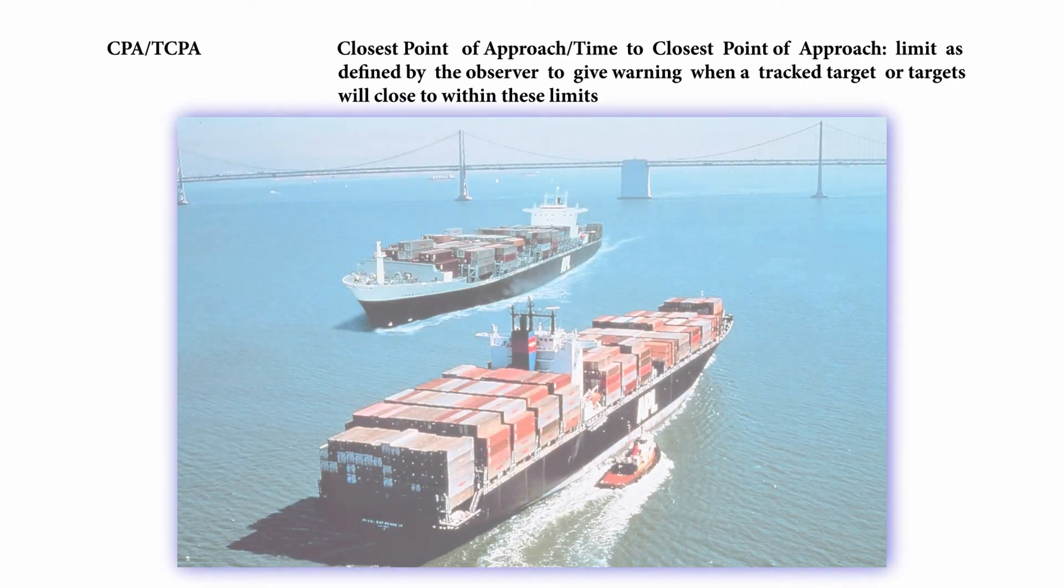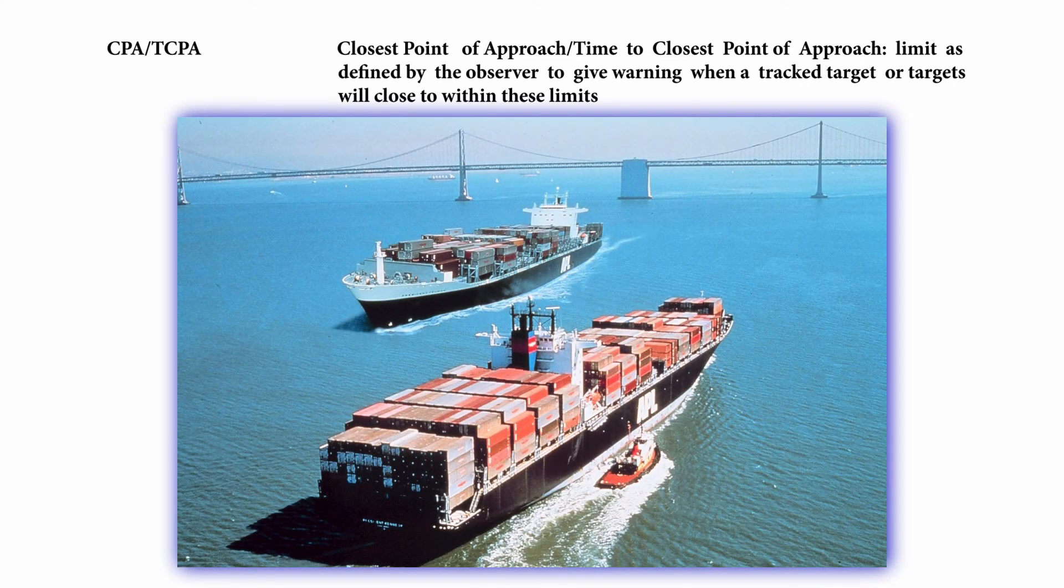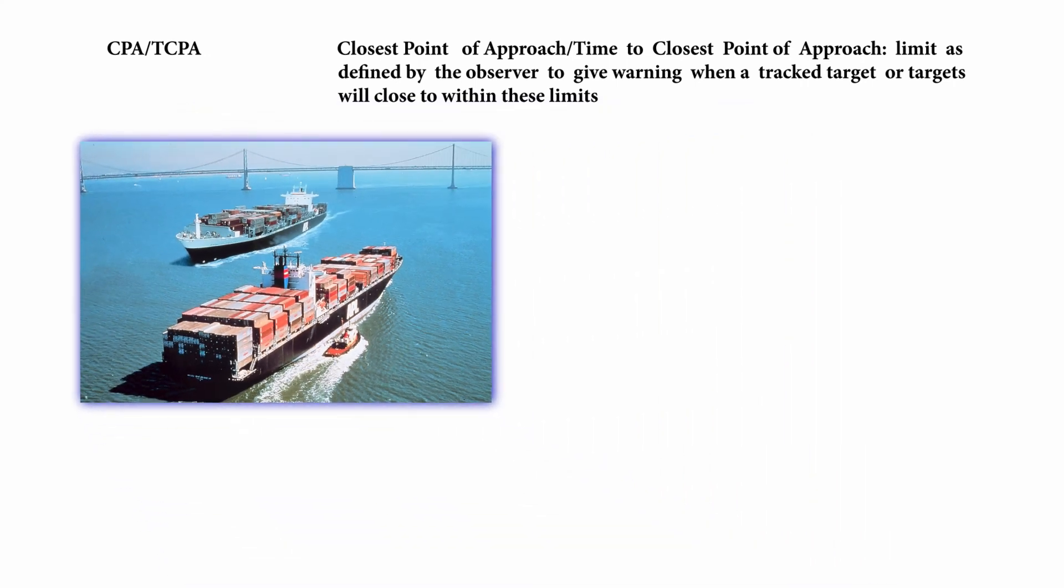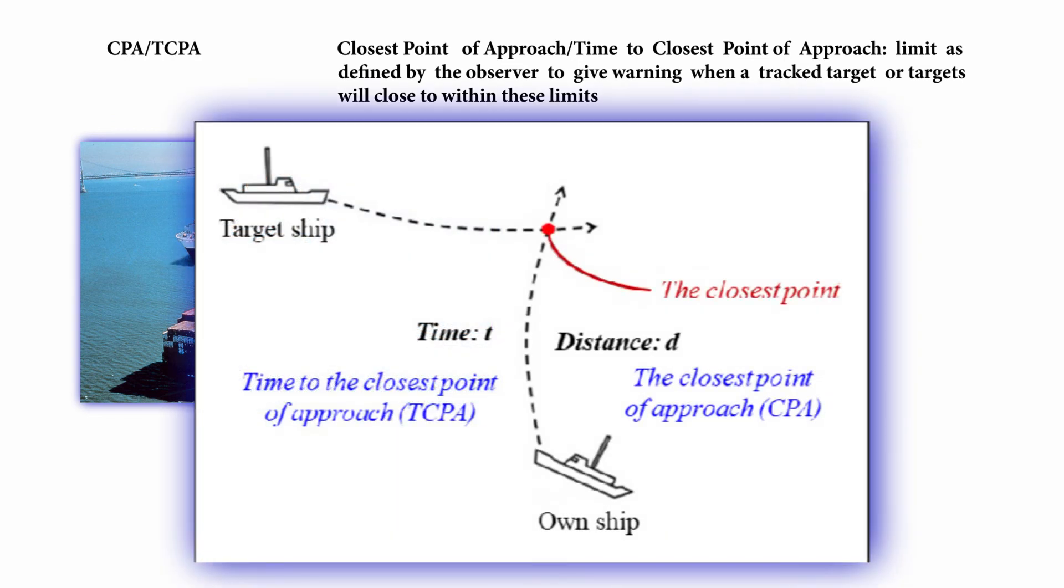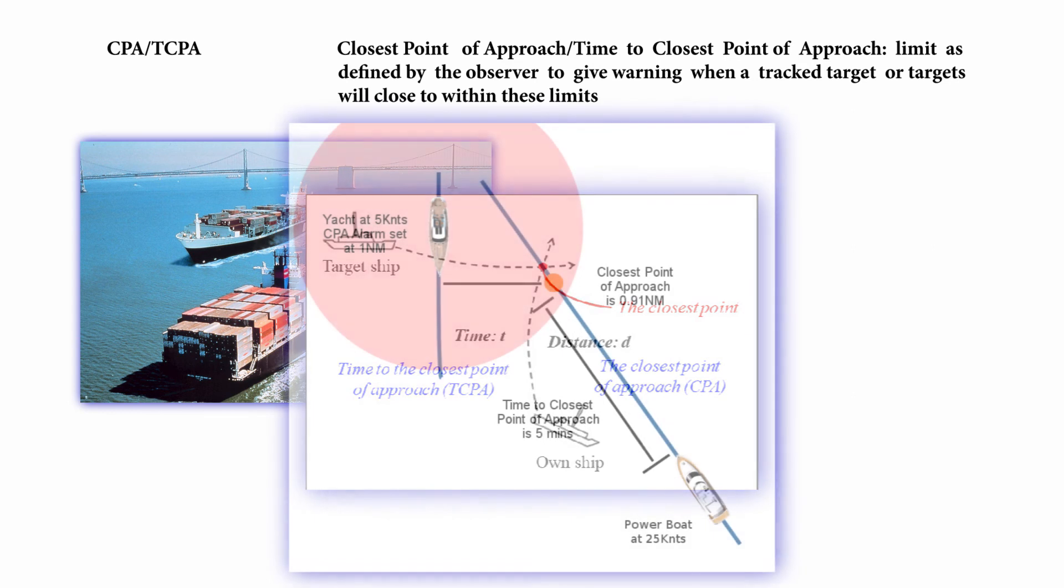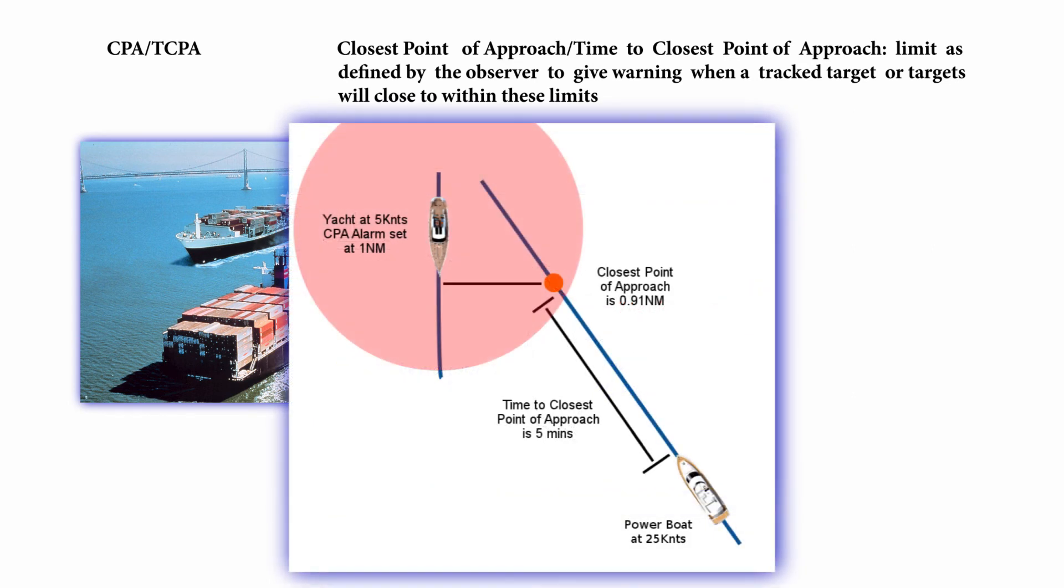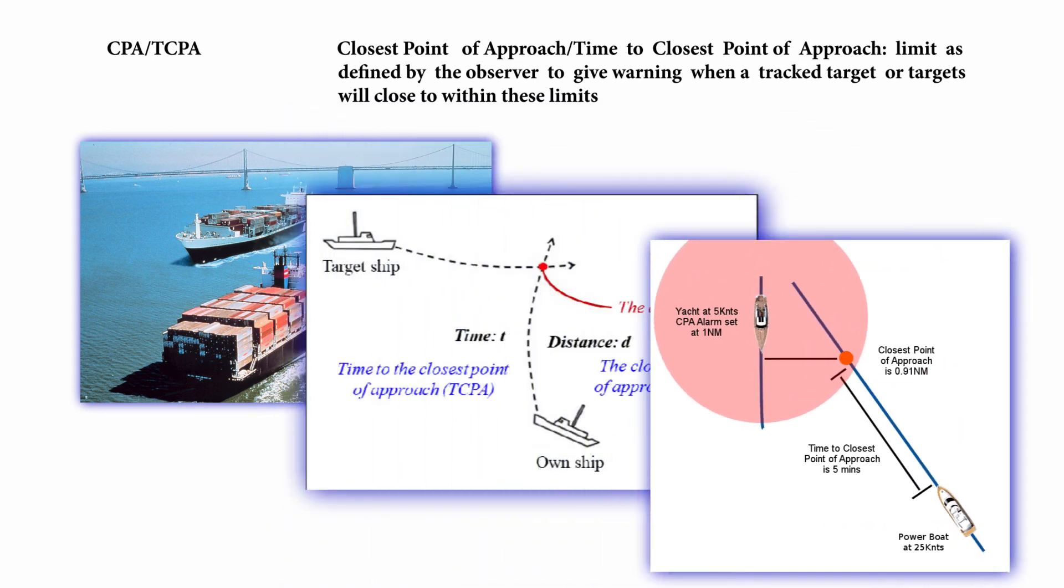CPA and TCPA: this is closest point of approach and time to closest point of approach. Limit as defined by the observer to give warning when a tracked target or targets will close to within these limits.